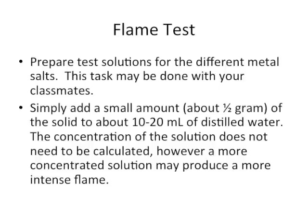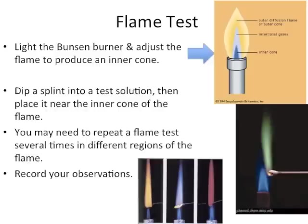Simply add a small amount, about half a gram, of the solid to about 10 or 20 ml of distilled water. The concentration of the solution does not need to be calculated. Light the Bunsen burner and adjust the flame to produce an inner cone flame, as shown in this figure. Then dip a splint into a test solution and place it near the inner cone of the flame. You may need to repeat a flame test several times in different regions of the flame. Record your observations in your notebook.